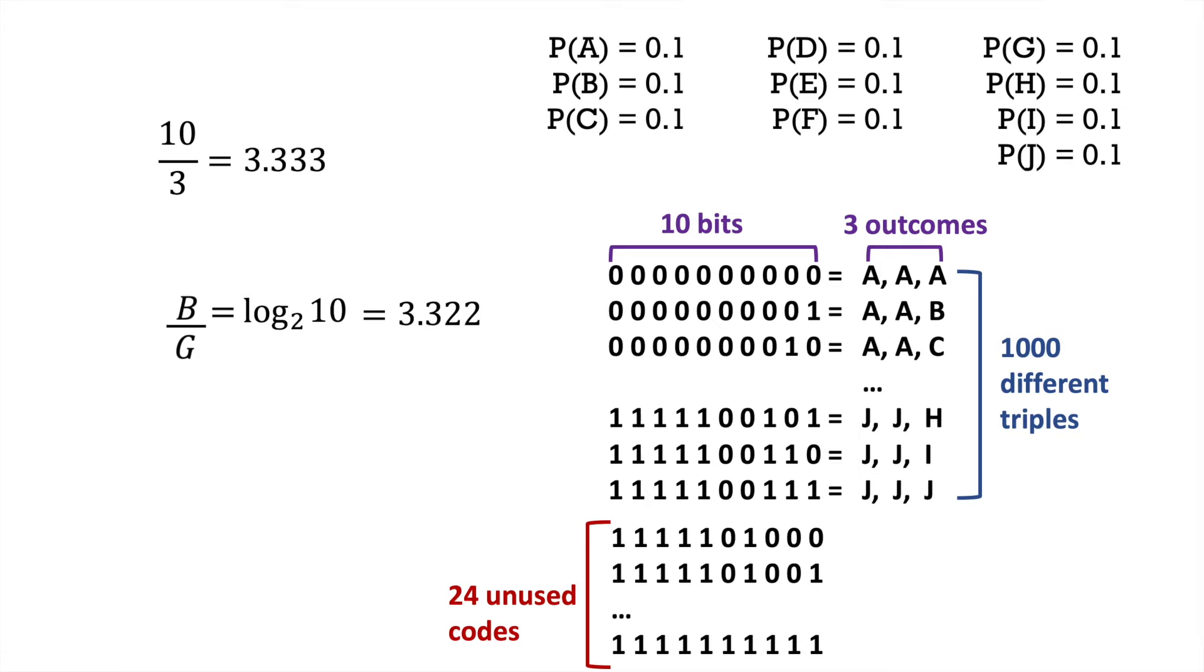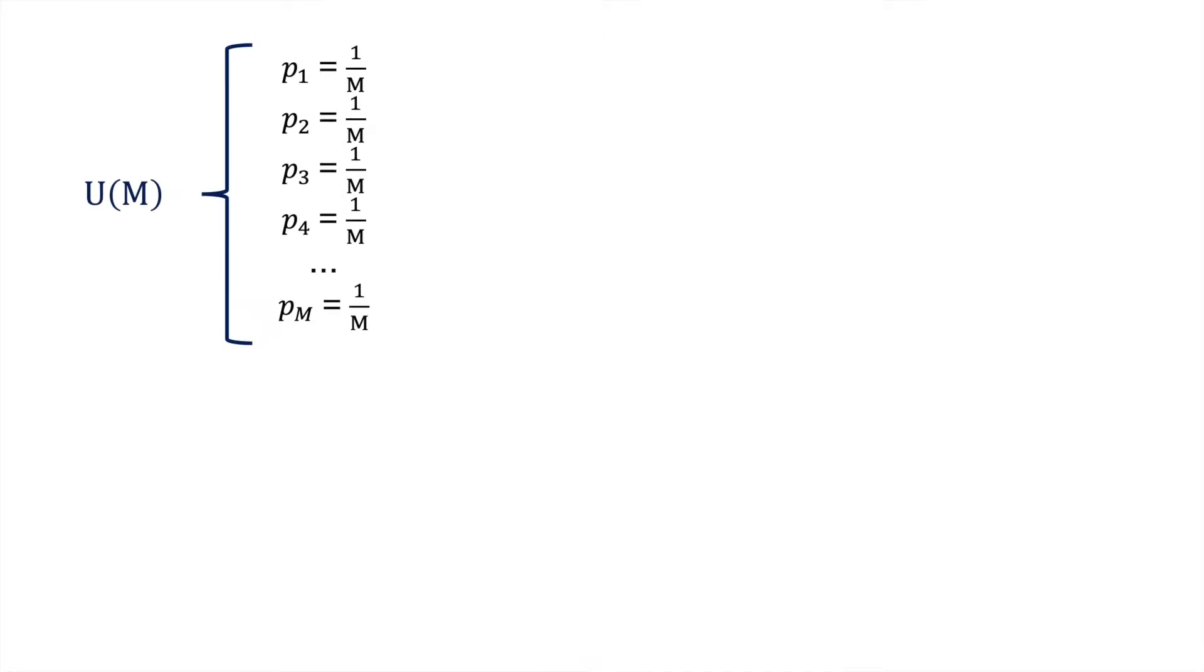We've shown that for a uniform distribution with m outcomes, the entropy is log base 2 of m bits. However, there still is a big issue, which is that most distributions are not uniform. That being said, we can use our previous statement to help measure the entropy of any distribution, even non-uniform ones.